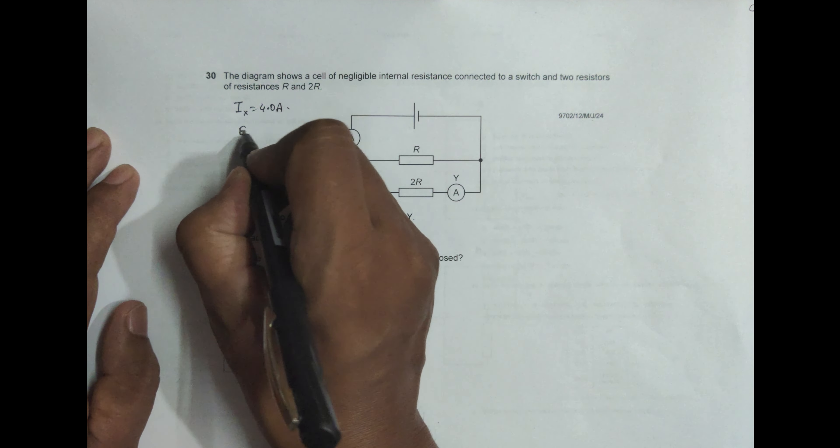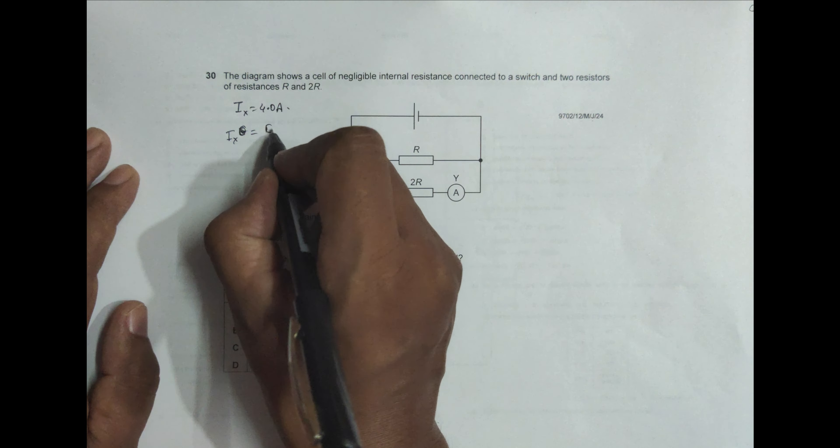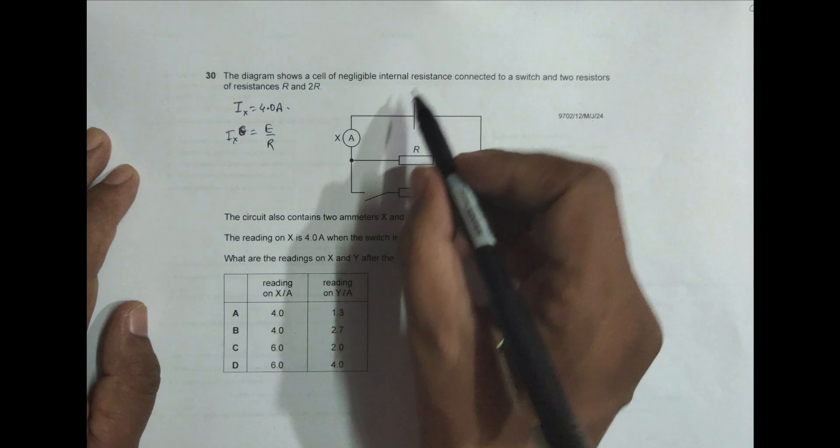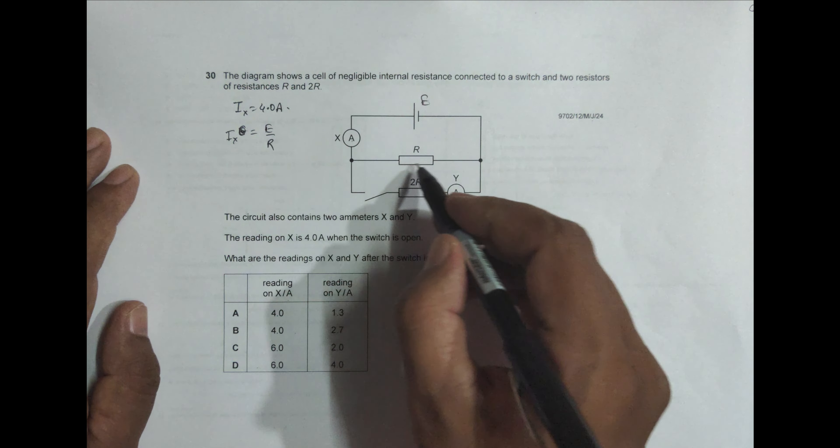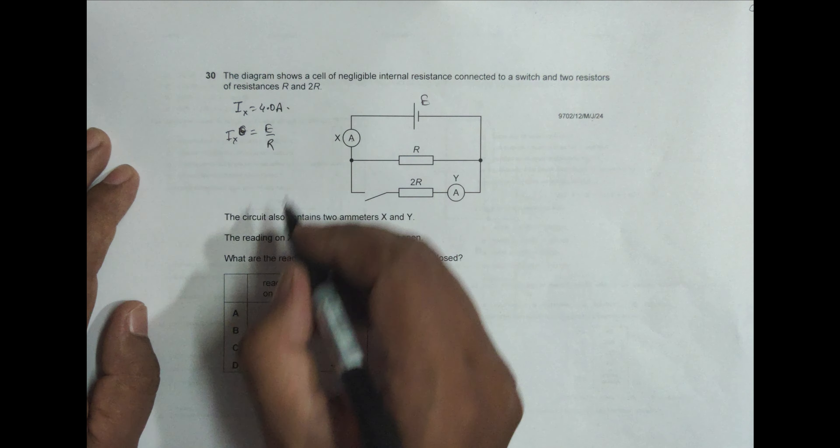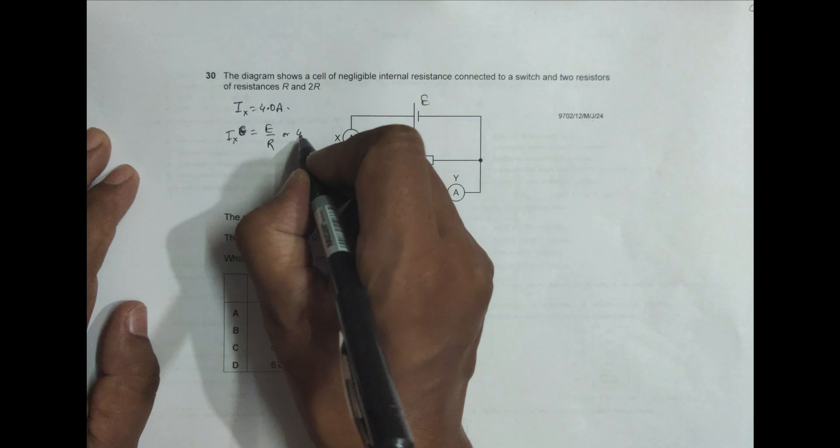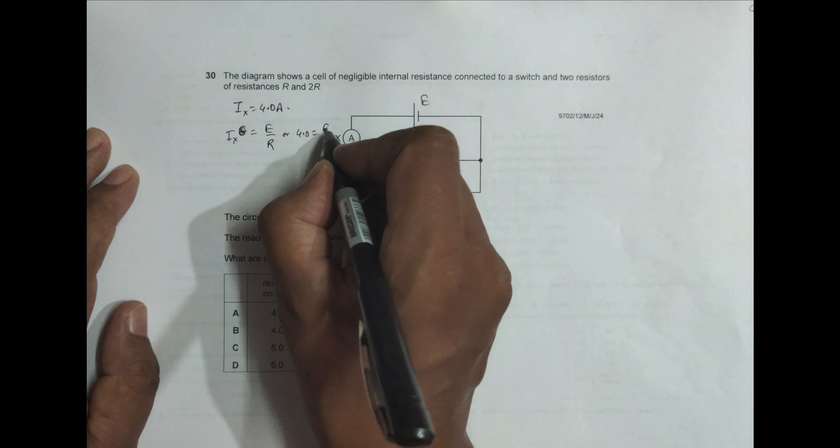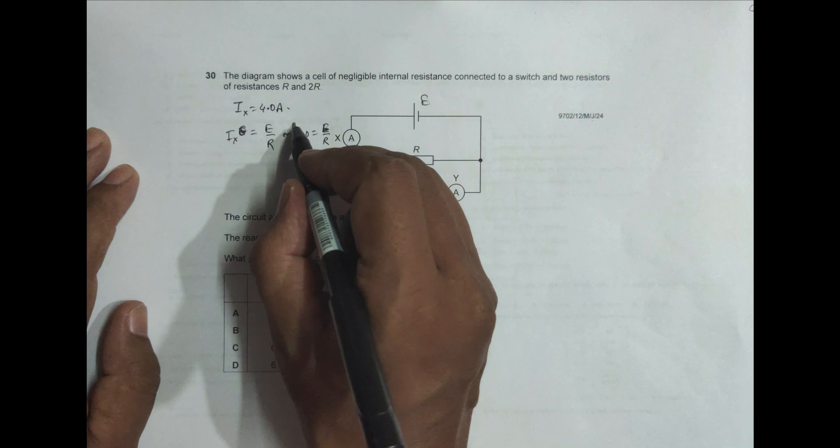So we have I_X should be equal to E by this R, E by R where E is the EMF here. R is the resistance through which current flows, so it should be E by R, which means 4.0 is equal to E by R, or E by R equal to 4.0. This is something that we should be taking in mind.